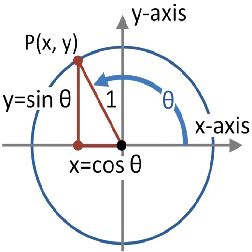Log base b of x equals log base 10 of x divided by log base 10 of b, or log base e of x divided by log base e of b.